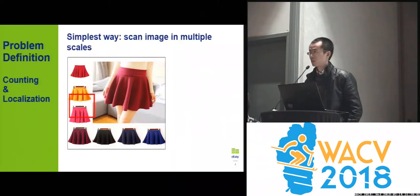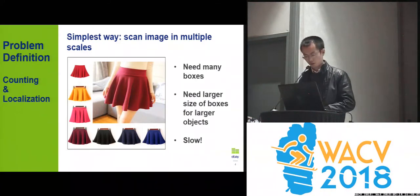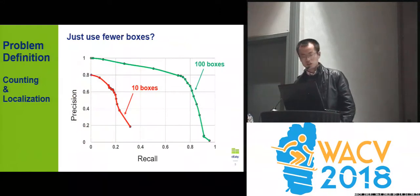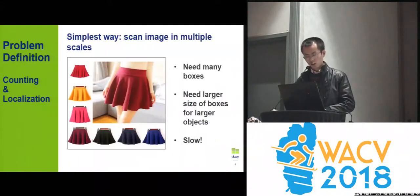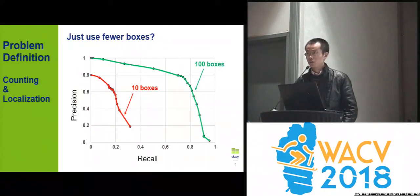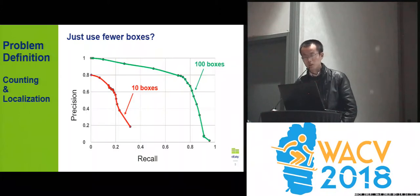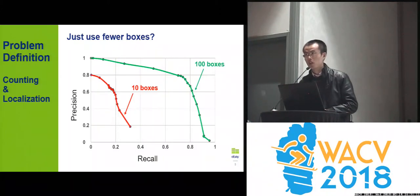Traditional object proposal approaches basically require a large number of class-agnostic proposals covering the whole image, making the algorithm fairly slow. Precision and recall were significantly dropped if one only uses a small number of boxes. The reason is that generic object proposals have very low success rate of locating an object — only a few of them can tightly enclose the object while most are redundant.